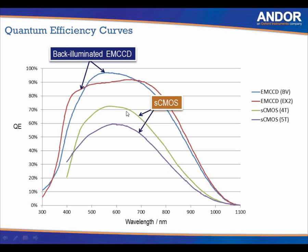For the sCMOS graph, there are two curves: green and purple. The purple has a lower quantum efficiency and depicts the 5T sCMOS sensor. There are two sensors with sCMOS: a 4T and a 5T, where T stands for transistor. With the 5T or five-transistor sensor, you have two exposure modes — rolling shutter and global shutter. Having the additional global shutter transistor reduces quantum efficiency to about 60%, but removing the global shutter transistor increases it to about 72%. This is very application-dependent.